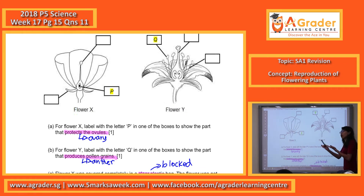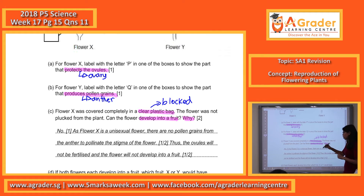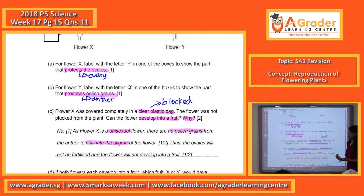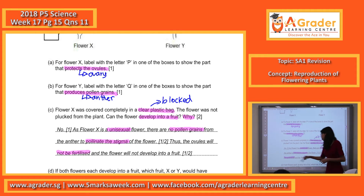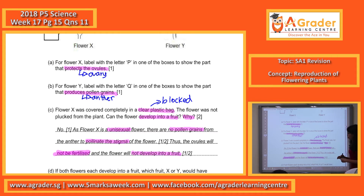So in the end, if pollination cannot occur, what cannot occur as well? Fertilization. Very good. Where pollination cannot occur, fertilization cannot occur as well. Please take note — mention the key word. Answer: No. Mention that it's a unisexual flower, which means it cannot pollinate itself. No pollen grains to pollinate the stigma of the flower, and it's being blocked by the plastic bag, so the ovules will not be fertilized and the flower will not develop. The moment it's not fertilized means it cannot develop into a fruit at all. Please mention these highlighted phrases to ensure you get all your marks.